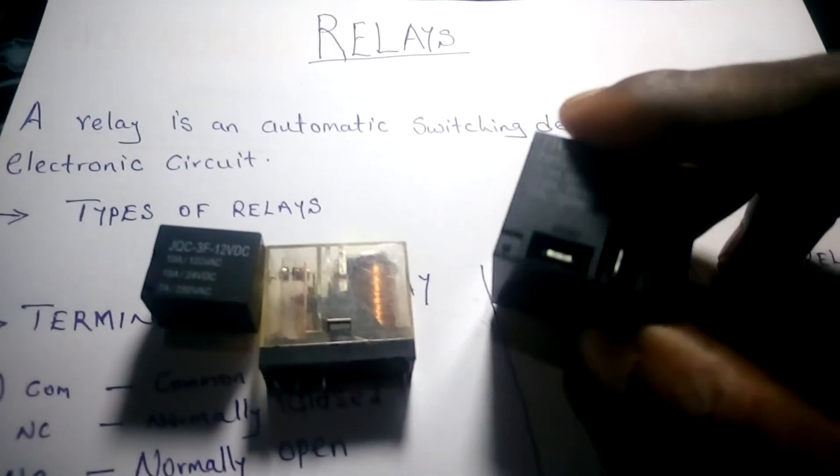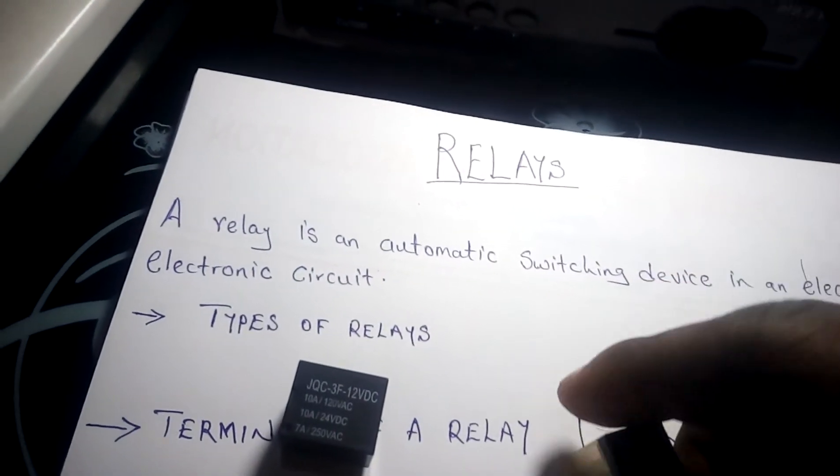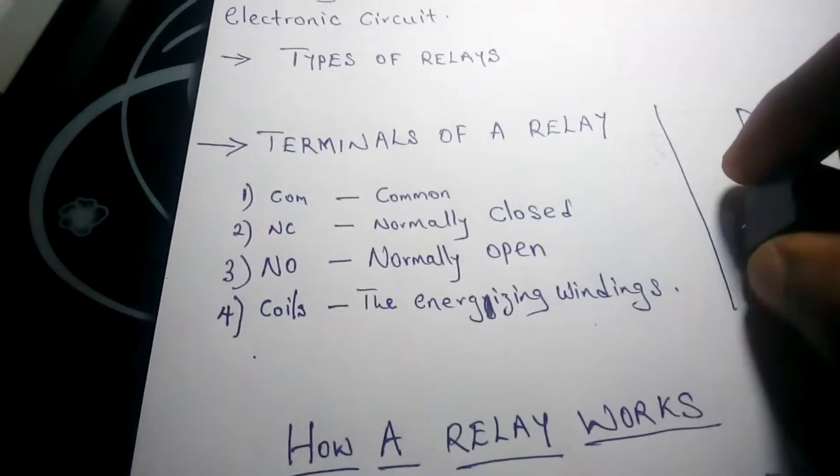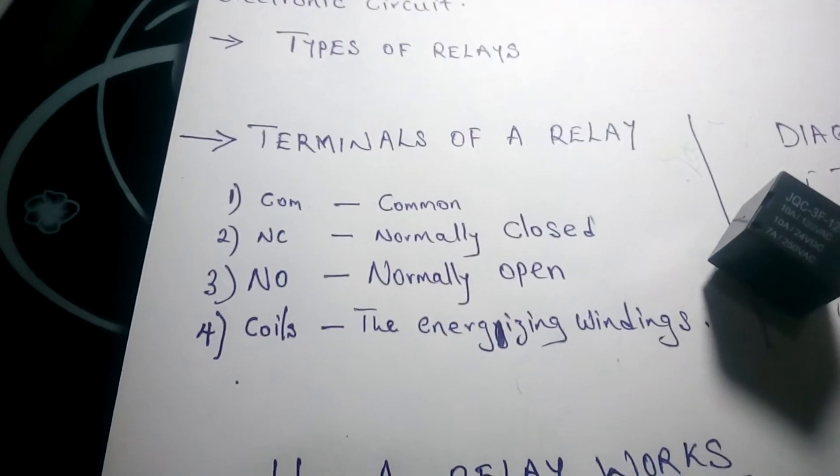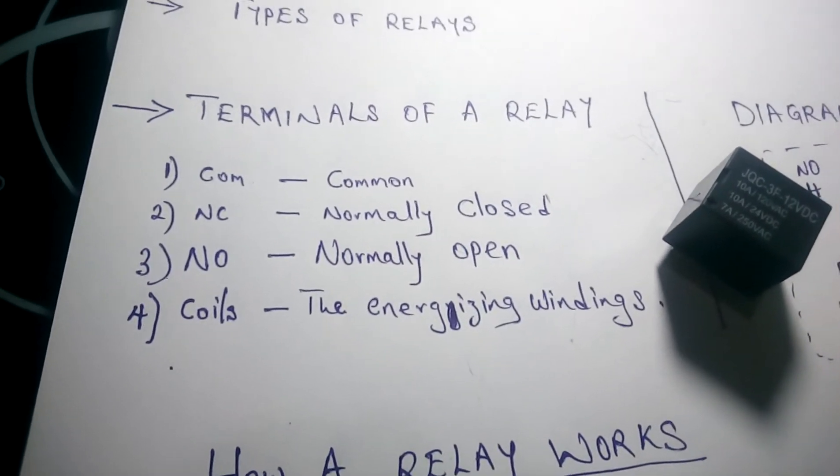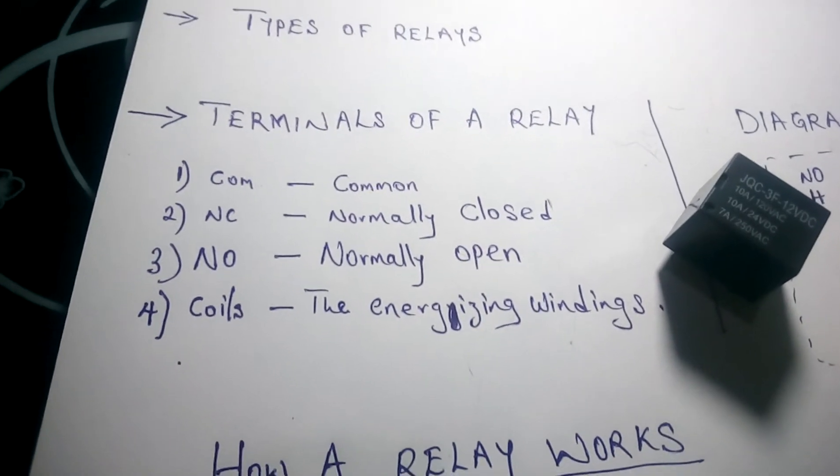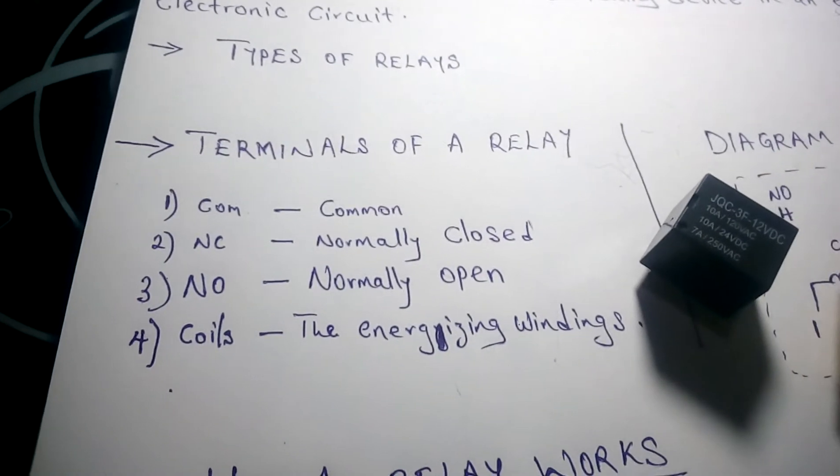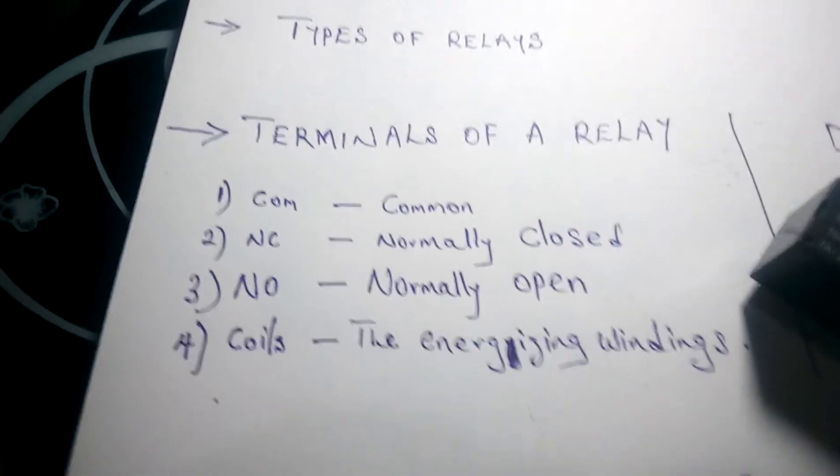Now next, there are common terms we use in relays which I would like to discuss with you guys. And these are: COM, NC, NO, and coils at times.